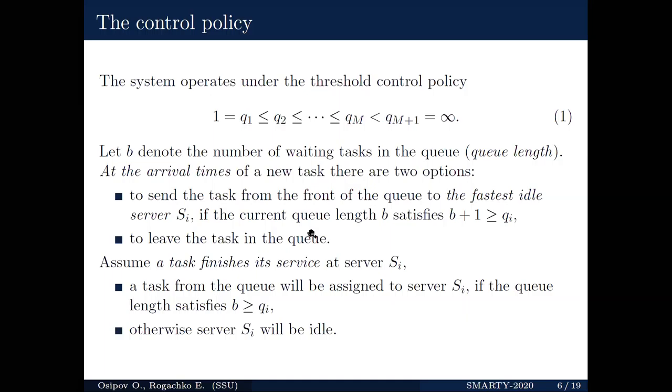For example, we can define threshold control policies as presented in this slide. Broadly speaking, there are some threshold levels for the queue. The levels you can see in this slide, and if there is some predefined number of tasks in the queue, then we turn on a certain server and assign the task to the server. In other words, we prefer not to send tasks to slow servers. Instead of this, we prefer waiting for any fast server to become idle. However, if there are too many tasks, a task from the queue may be assigned to a slow server.